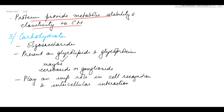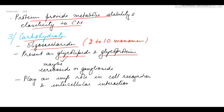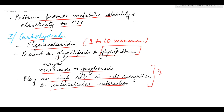Besides proteins, carbohydrates are also present in the cell membrane. The carbohydrates associated with the cell membrane are oligosaccharides, meaning they are made up of 2 to 10 monomers. They are present in the form of glycolipids and glycoproteins — usually glycoproteins. Glycolipids may be cerebrosides or gangliosides. Glycoproteins play an important role in cell recognition and intercellular interaction, which has an important role in the immune system.